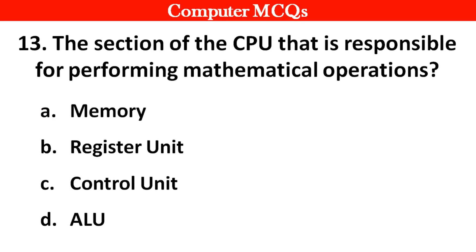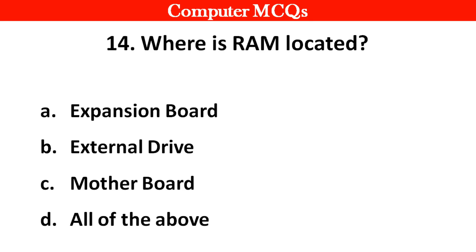Next question. The section of the CPU that is responsible for performing mathematical operations — Options A: Memory, B: Registers unit, C: Control unit, D: ALU. Right answer is option D: ALU — Arithmetic Logic Unit.